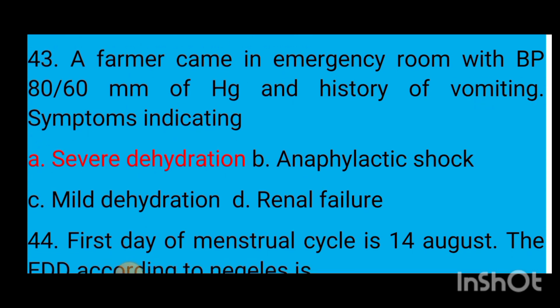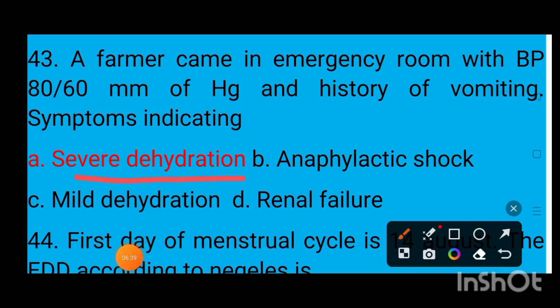Question number 43: A farmer came to the emergency room with BP 80/60 mmHg and history of vomiting — symptoms indicating option A severe dehydration, option B anaphylactic shock, option C mild dehydration, option D renal failure. The correct answer is option A — severe dehydration — because the farmer was working in an open field and due to exposure to sun, severe dehydration can occur.